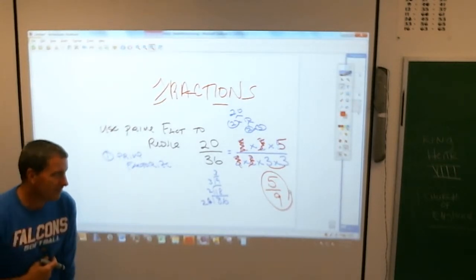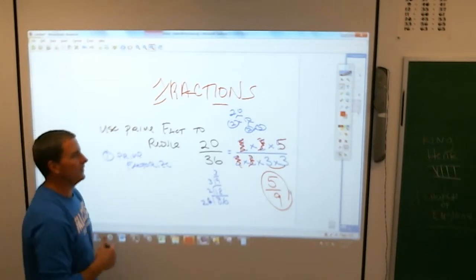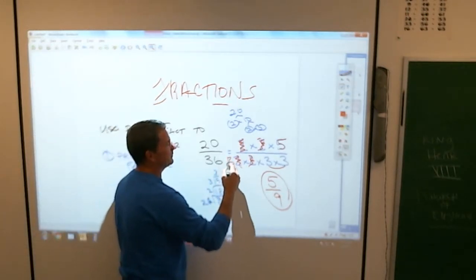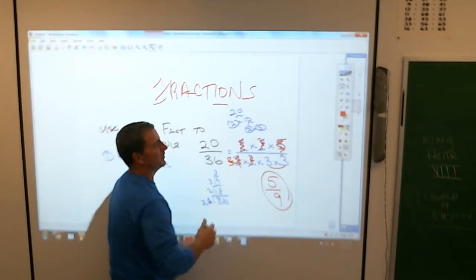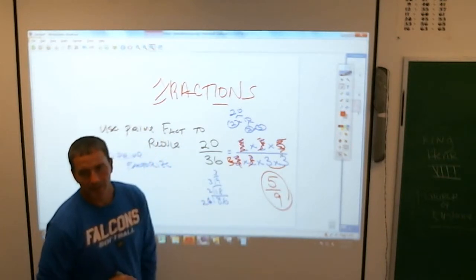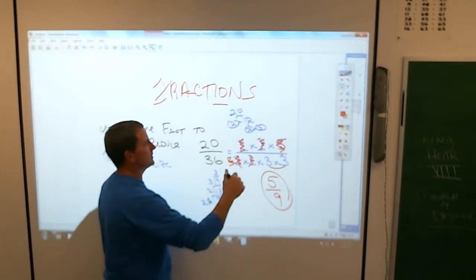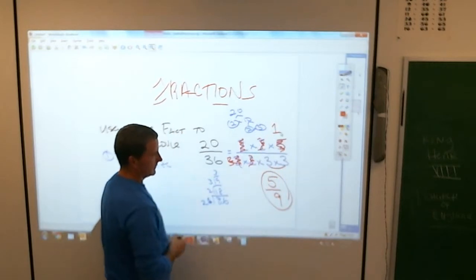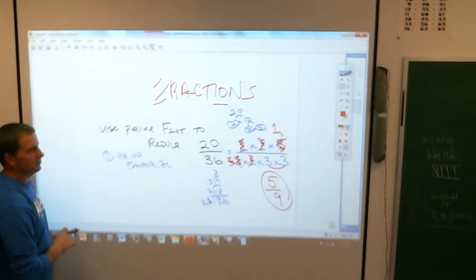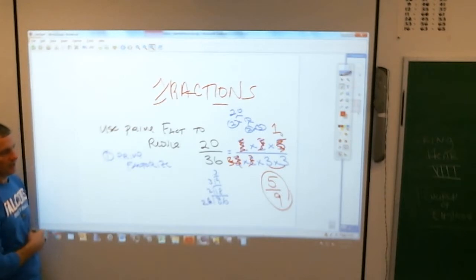Ryan, Connor, what happens if everything crosses off? What if I would have had a 5 on the top, and this 5 and that 5 would have crossed off, and I had nothing left on top? You would have put a 1 on top. Yes. You're always left to put a 1. They don't always cross. I mean, don't ever cross out, but there's nothing left. So, that would be 1 over 9 if that was the case. Perfect.